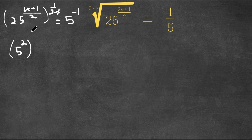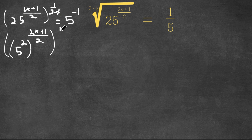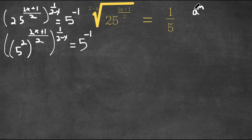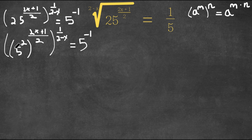So 5 squared to the power of 2x plus 1 over 2, to the power of 1 over 2 minus x, is still equal to 5 to the power of negative 1. Now if we have something in the form a to the power of m, to the power of n, this equals a to the power of m times n. Meaning 5 squared to the power of 2x plus 1 over 2 is 5 to the power of 2 times 2x plus 1 over 2, and the 2's cancel out, leaving us with 5 to the power of 2x plus 1.